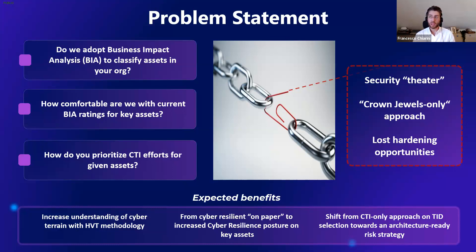As a result, we as defenders often inherit a list of key critical assets — business-critical assets — which are defined by a BIA process. This process has a lot of considerations for availability of assets but does not account for the threat piece. This list of assets is often also provided to CTI teams for intelligence requests and insider threat programs, but it's derived from a BIA exercise. What we want is to think not only about the crown jewel — key business-critical assets — but also all underpinning assets that are mission-critical and enterprise-essential.